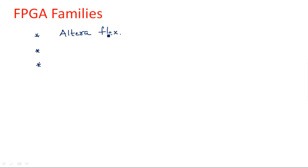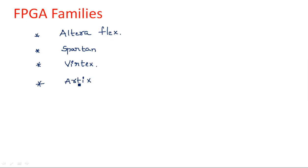Let us see what are the various families we are having. There are 3 different types of FPGA families we are going to see. The first family is Alteraplex. The second one is Spartan FPGA family, and the third is Vertex. One more family recently came into existence — that is the Artix family.